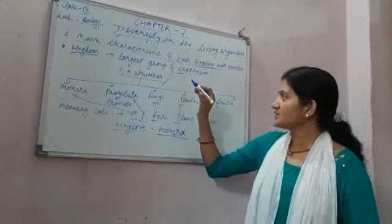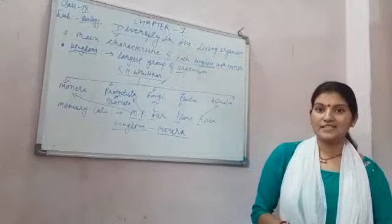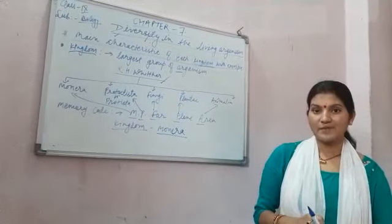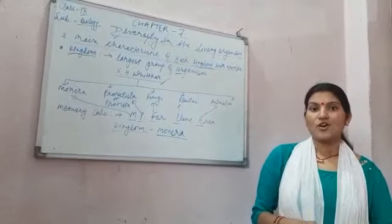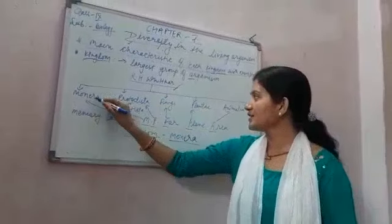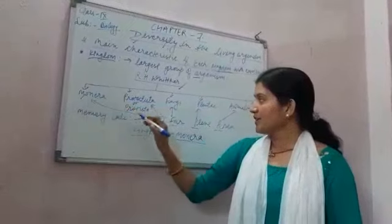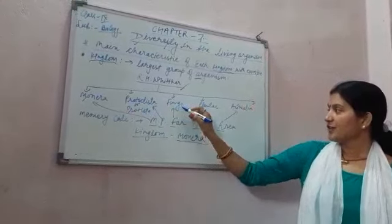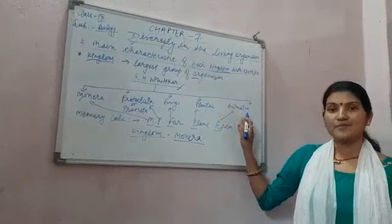R.H. Whittaker, a taxonomist, in 1969, proposed the five kingdom classification. He categorized all the living organisms into five kingdoms: Kingdom Monera, Kingdom Protista, Kingdom Fungi, Kingdom Plantae, and Kingdom Animalia.